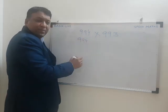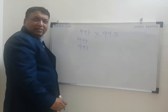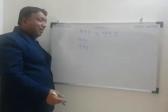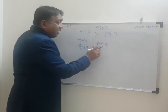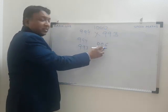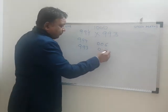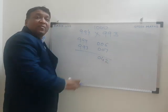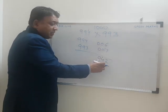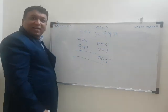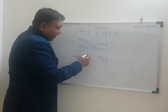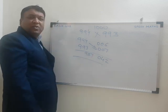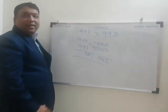Now let's take a 3-digit number: 994 multiplied by 993. Since these are 3-digit numbers, I take the base as 1000. So: 994 minus 1000 gives minus 6 (note: I write this in 3 digits since base is 1000); 993 minus 1000 gives minus 7. Now 6 into 7 equals 42, so I write 042 (3 digits for the right part). For the left part: 994 minus 7 equals 987. The answer is 987042.